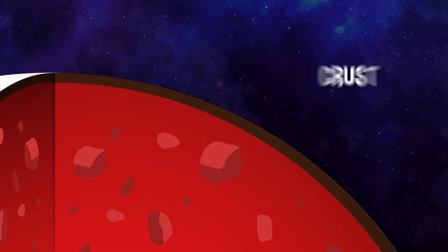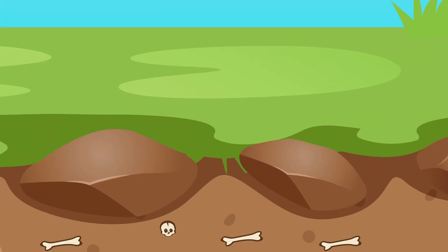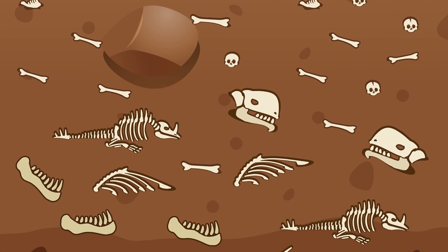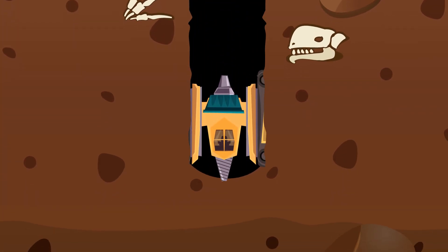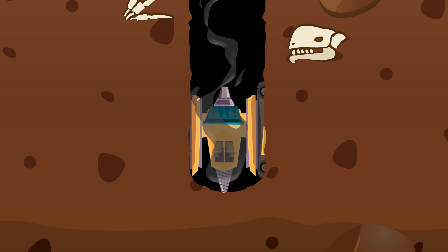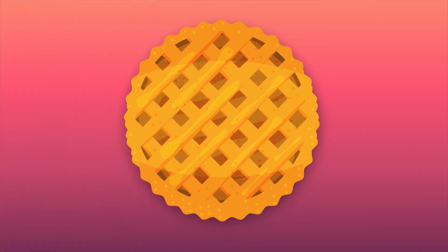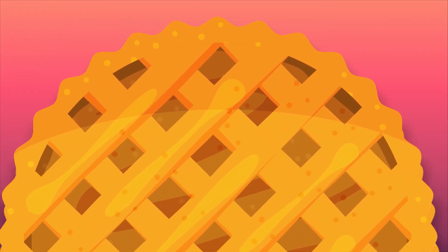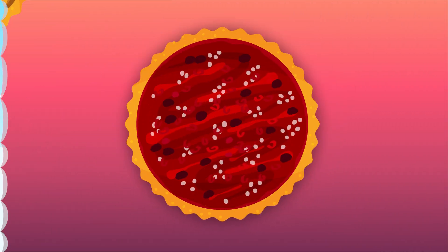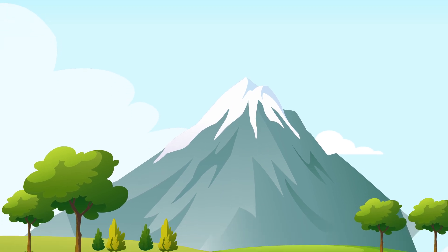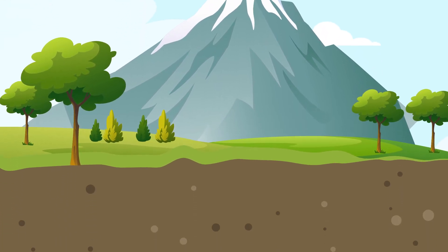The outer layer is the crust, made up of solid rocks and minerals. In all our years digging into the ground, humans have never been able to dig past the crust, even with state-of-the-art equipment. It's a bit like the crust of a pie, a thin, hard outside layer that makes it look solid, even if the insides are gooey.